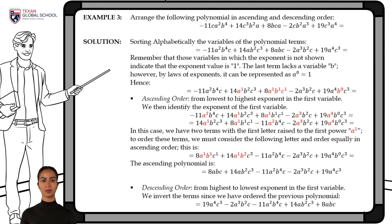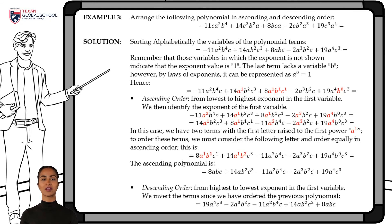To order the polynomial in ascending order, the first term is the one with the lowest degree — with variable a raised to the 1st power and b raised to the 1st power. The next term also has variable a raised to the 1st power, but its variable b grows to the 2nd power. Then the 3rd term has variable a squared, followed by the term with a cubed, and finally the term with a raised to the 4th power. As mentioned, the descending order is exactly the other way around, such that the degree of the exponents decreases.